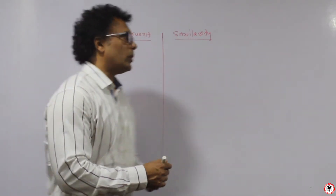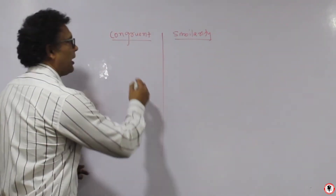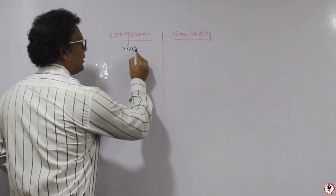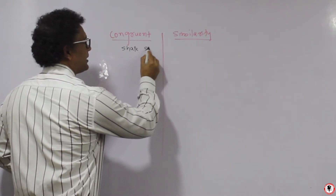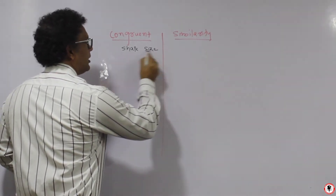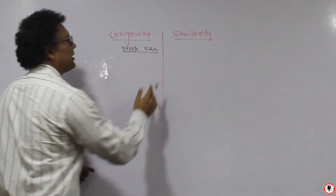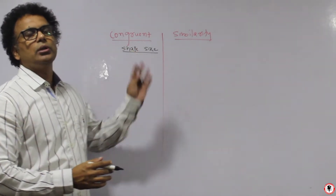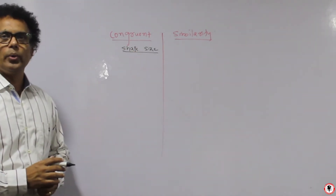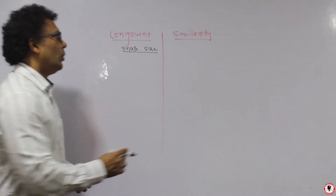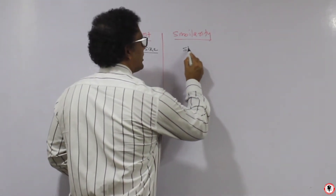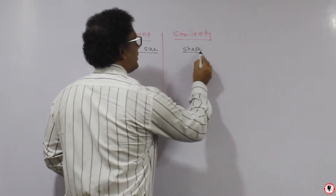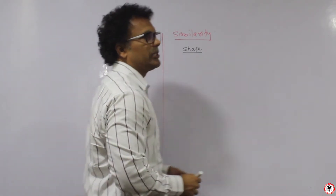There are two things: one is the shape and the size. If shape and size both are the same, then those are congruent. Only if the shape is the same, then we see similarity.